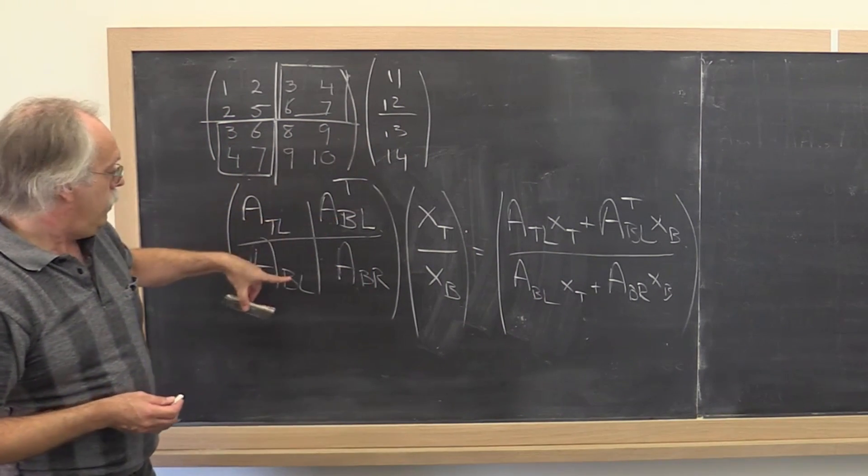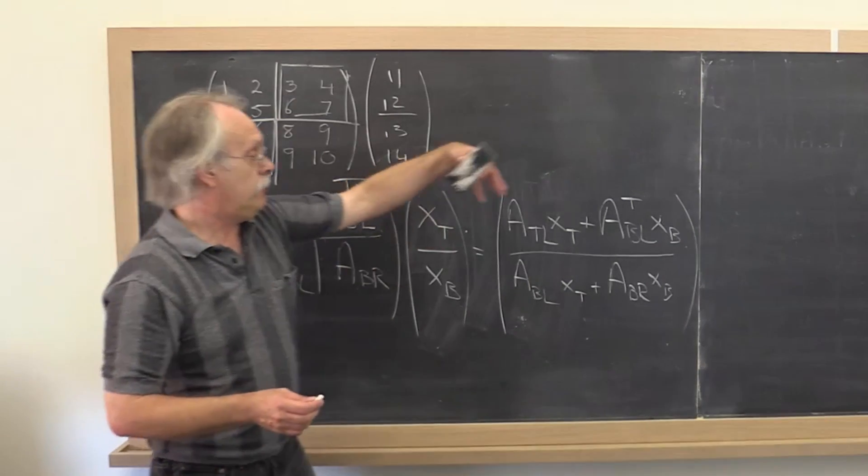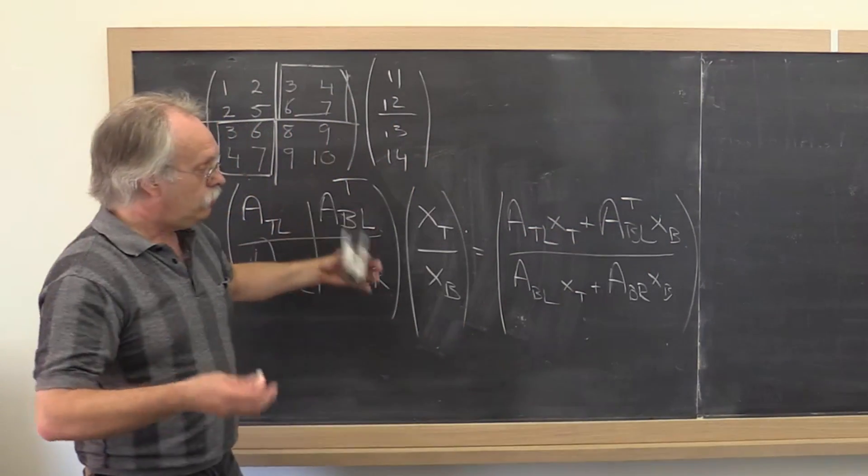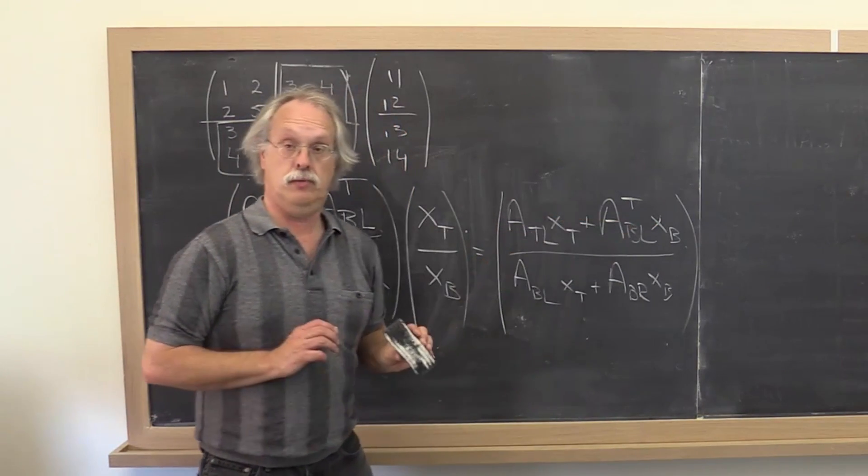Now that doesn't mean that you have to go and take this matrix and create a copy of it that's transposed in order to multiply. No, it just means that you have to compute with it as if it were multiplied.